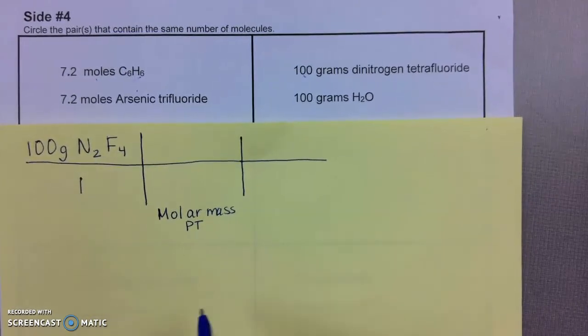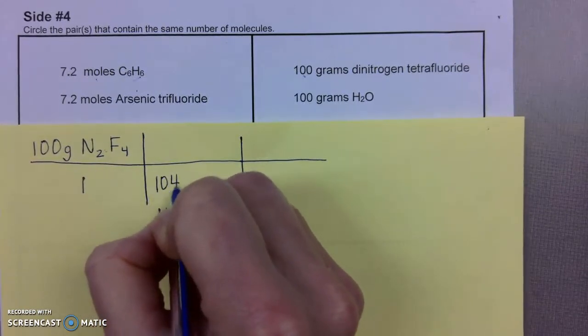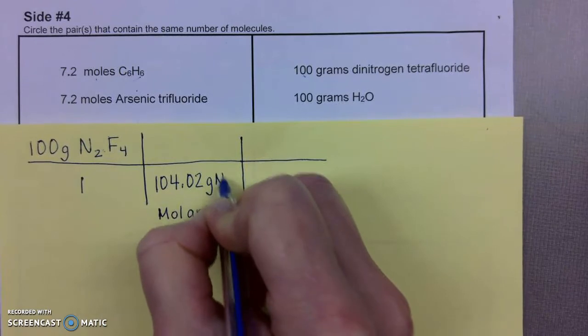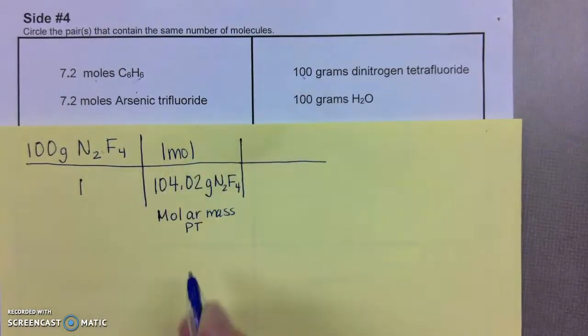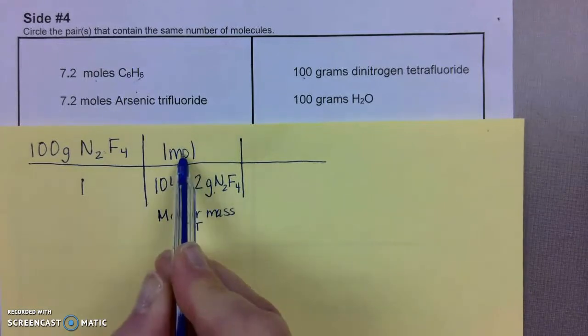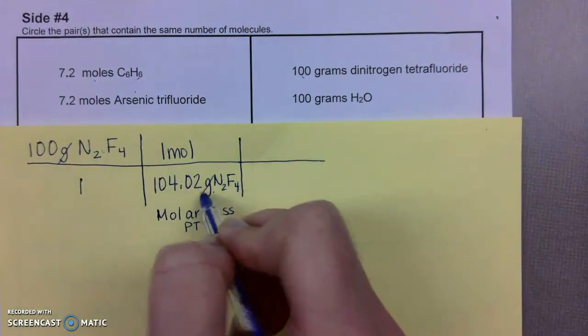If you don't remember how to get the molar mass, please review the molar mass video. So calculating the molar mass, I get 104.02 grams of N2F4. I'm going to place one mole of N2F4, the unit of grams per one mole. The reason I place this on top is because I need to make sure I can cancel out my units.